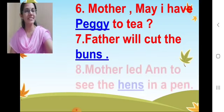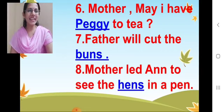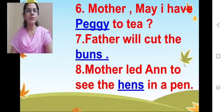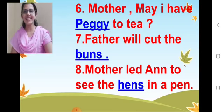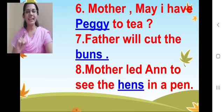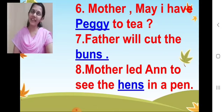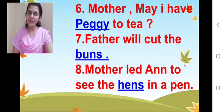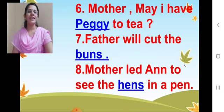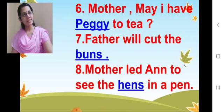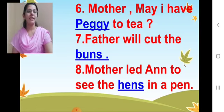You remember the Radiant View lessons very nicely, children. Now comes our eighth one. 'Mother led Anne to see the ___ in a pen.' Hens! Yes — 'Mother led Anne to see the hens in a pen.' Correct? So hens spelling: H-E-N-S. Eight done.